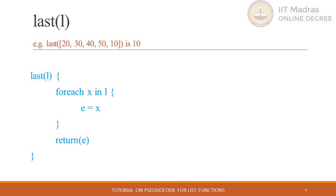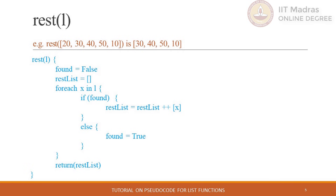Last is another function which returns the last element in the provided list. Here, for-each iterates over the elements in the list and will always update the value of the variable e. Therefore when the for-each block ends its execution, variable e will hold the last value in the list. Similar to the first function, if we pass an empty list to the last function, then the output is undefined.